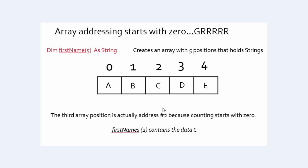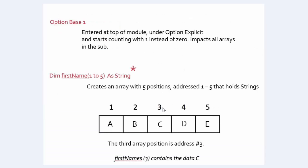To correct the off-by-one issue, we have two options. At the very top, right under Option Explicit, we can enter 'Option Base 1'. If we do that, all of our arrays will start counting with one instead of zero, but it will impact all arrays in the sub. The way we'll do it in this class is to actually give an explicit array address range — telling it one to five for a five-position array. Now our third array address holds our third piece of data.